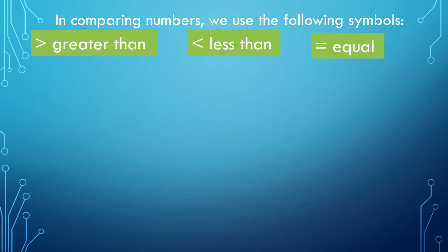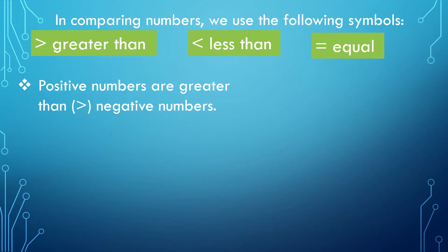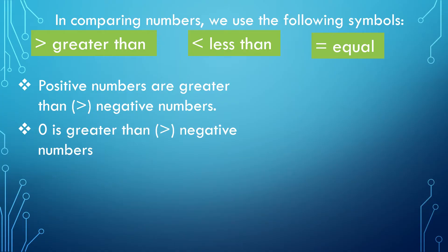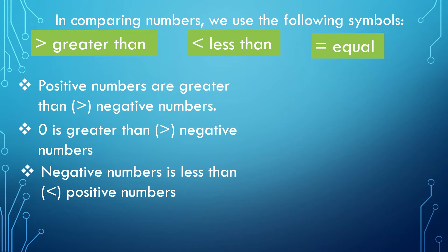Let's recall our idea about integers. We know that positive numbers are greater than negative numbers. Zero is greater than negative numbers, and negative numbers are less than positive numbers. In comparing numbers, we can use the following symbols: greater than, less than, or equal.